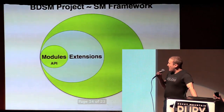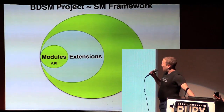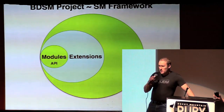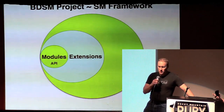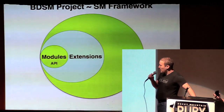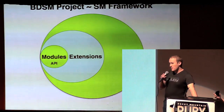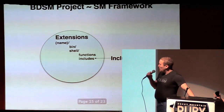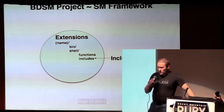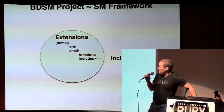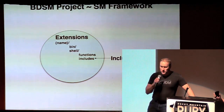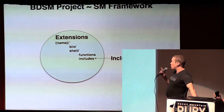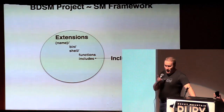So now what we have is the core CLI and our extensions. The point of the modules I showed you earlier is that the modules API can be used by extensions. There's a lot to it — I'm not going to go into it — but basically you have an includes file inside of the shell directory, and you can include the module APIs.